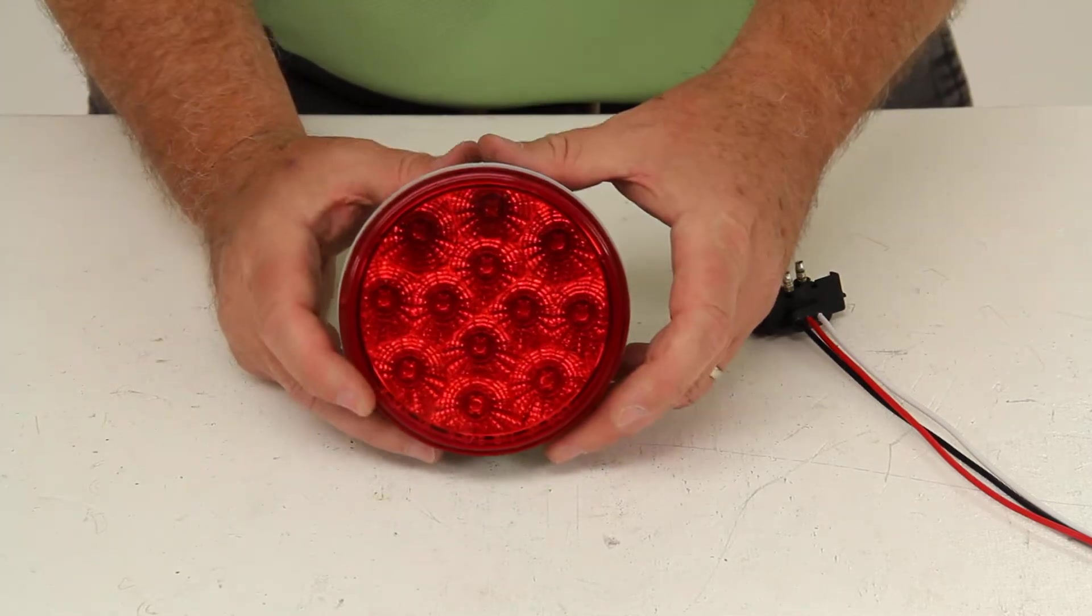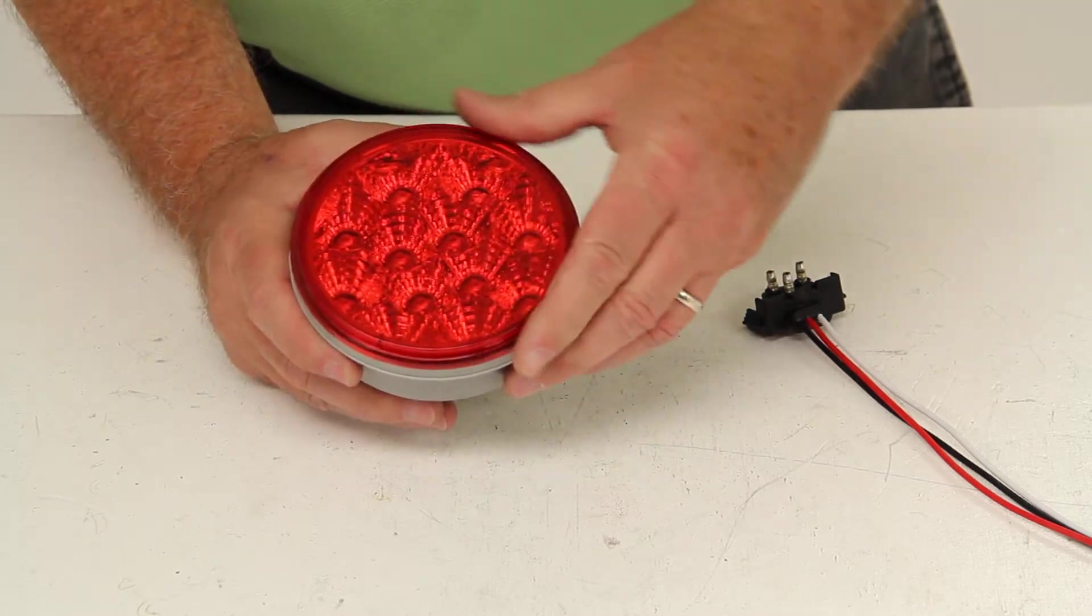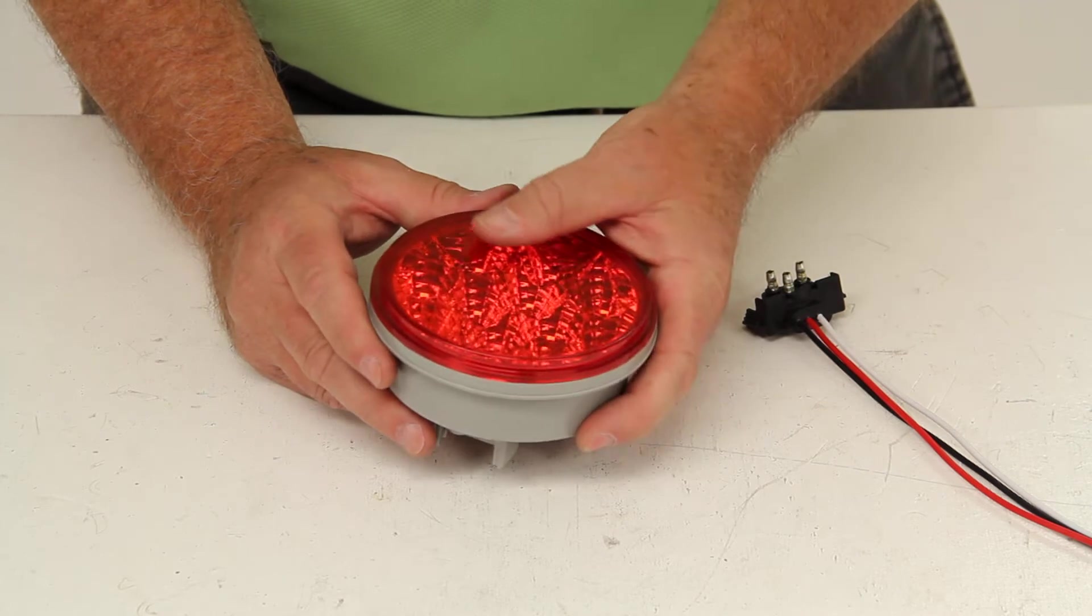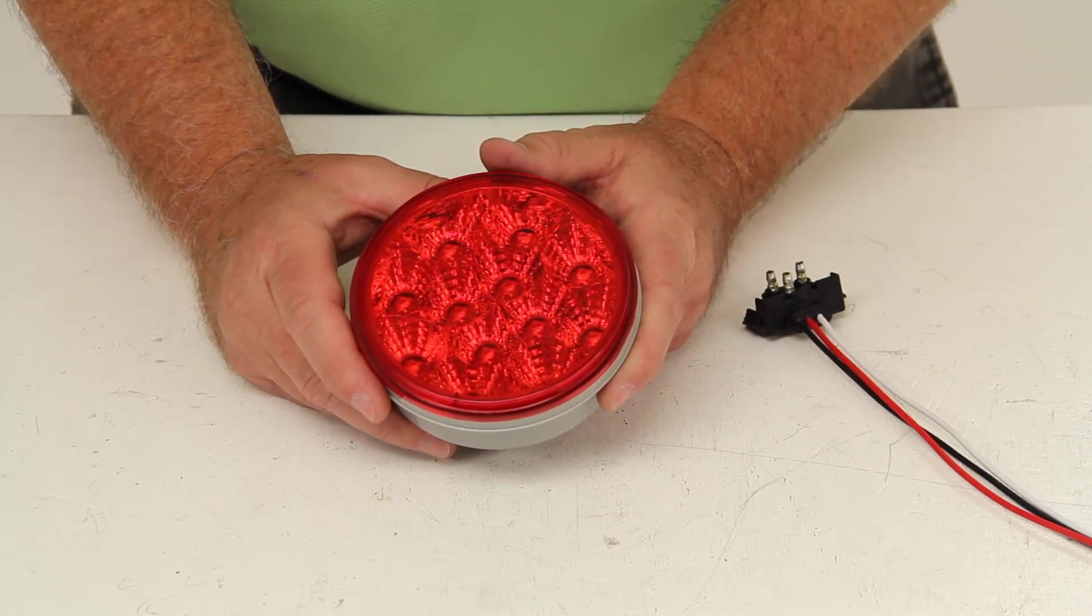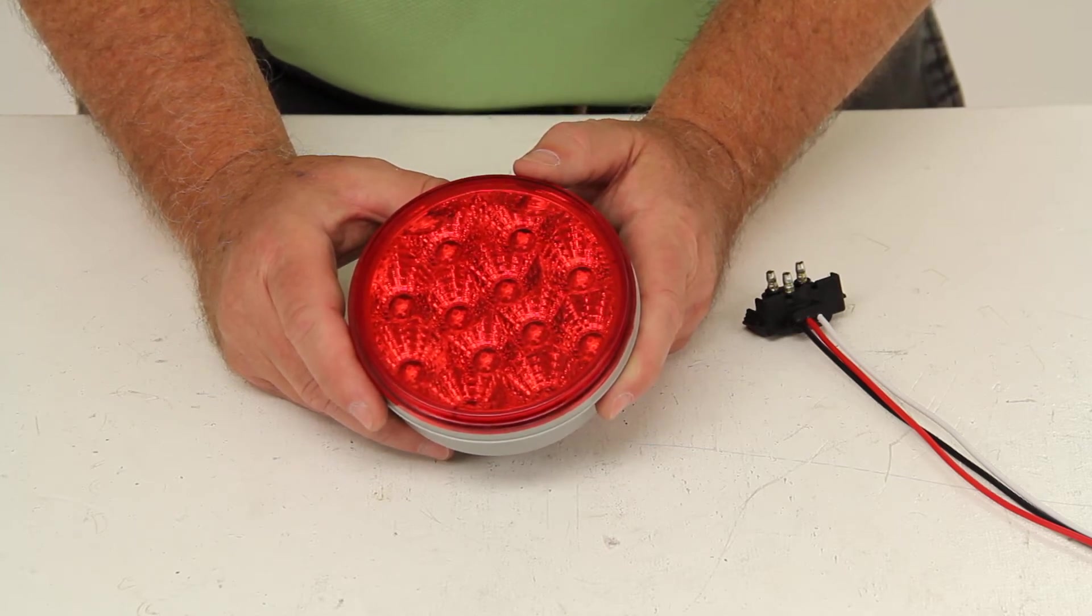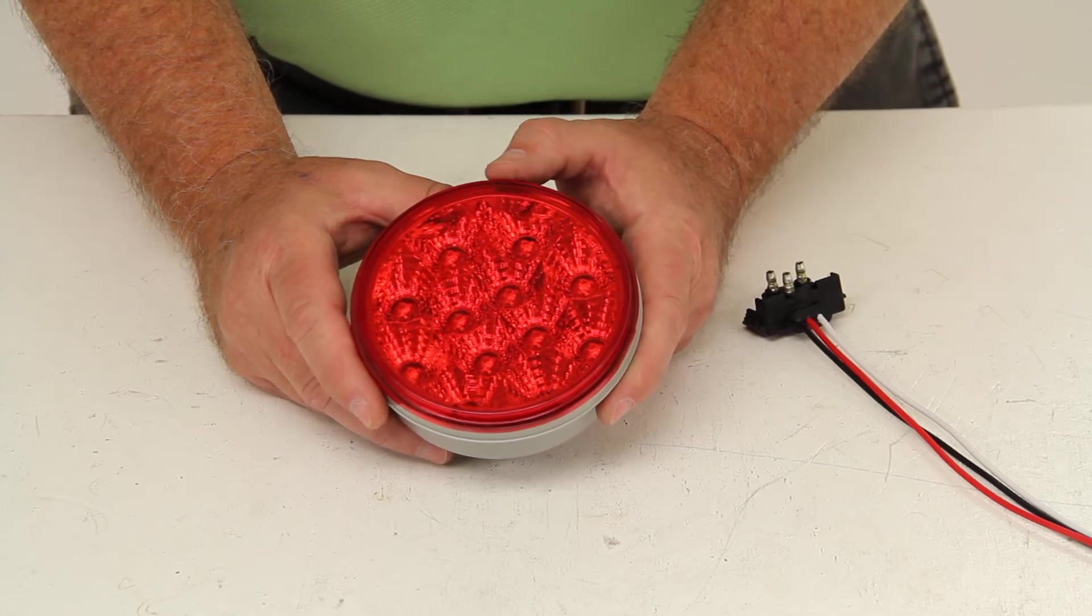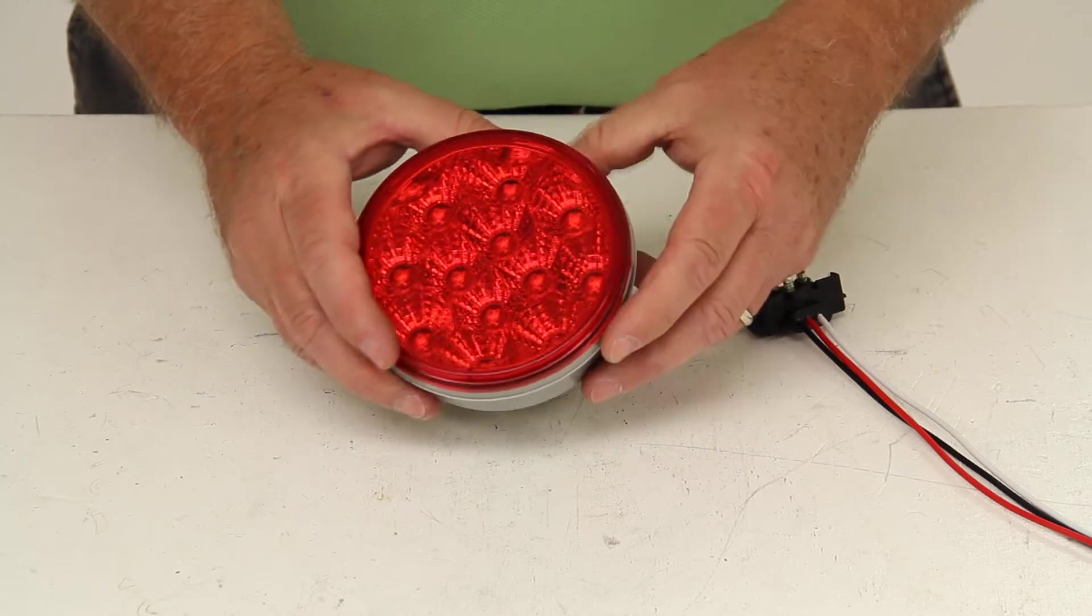This does use Miroflex technology which will increase the light output while using 90% less energy than incandescent bulbs. This LED light will draw 0.181 amps at 12.8 volts when the stop and turn is on, and it will draw 0.023 amps at 12.8 volts when just the tail light is on. It is DOT approved. There is a lifetime warranty on the LEDs.